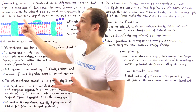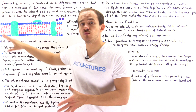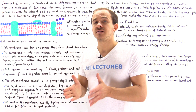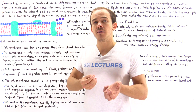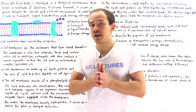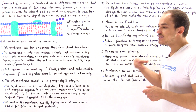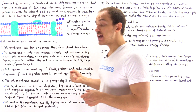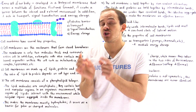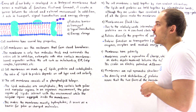Function number two is transport. Within a cell membrane, we have proteins, and these proteins create channels or pumps that allow the selective movement of certain things outside or into the cell. This is a semi-permeable membrane, meaning the cell picks and chooses what to allow into the cell and what not to allow in.